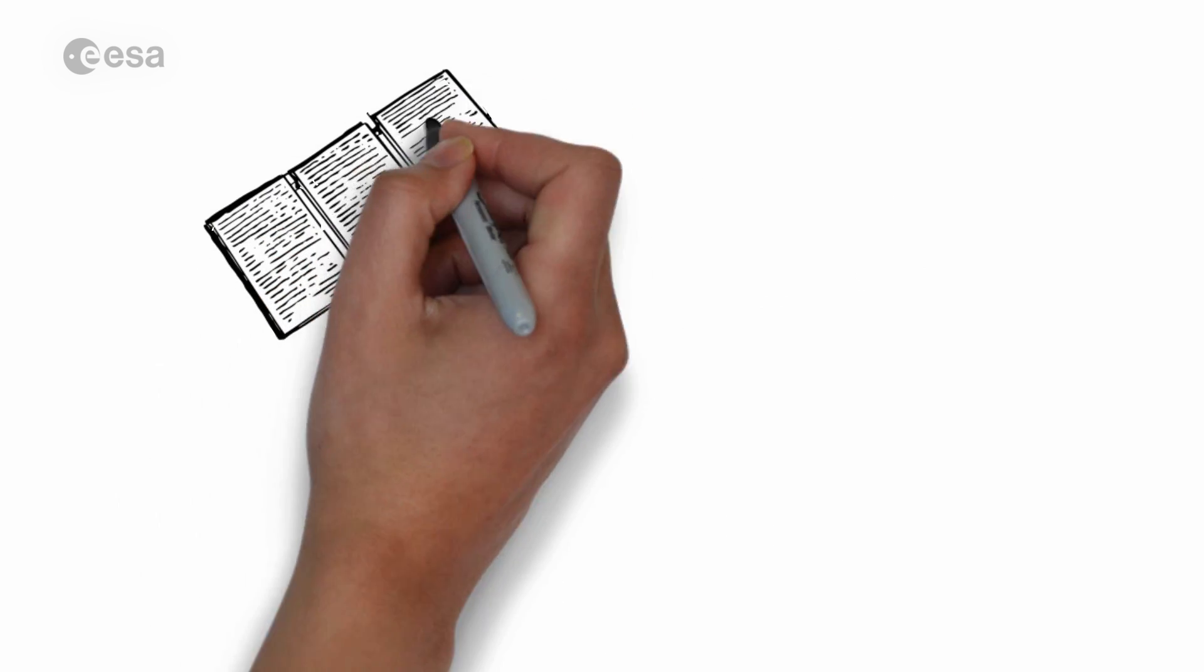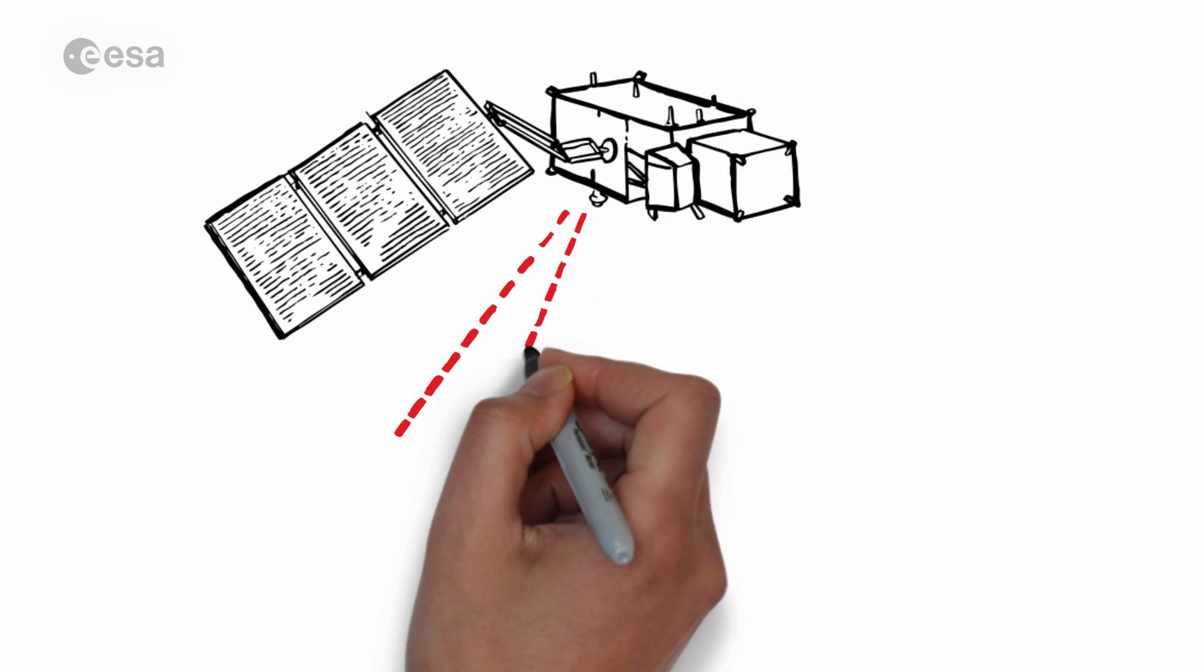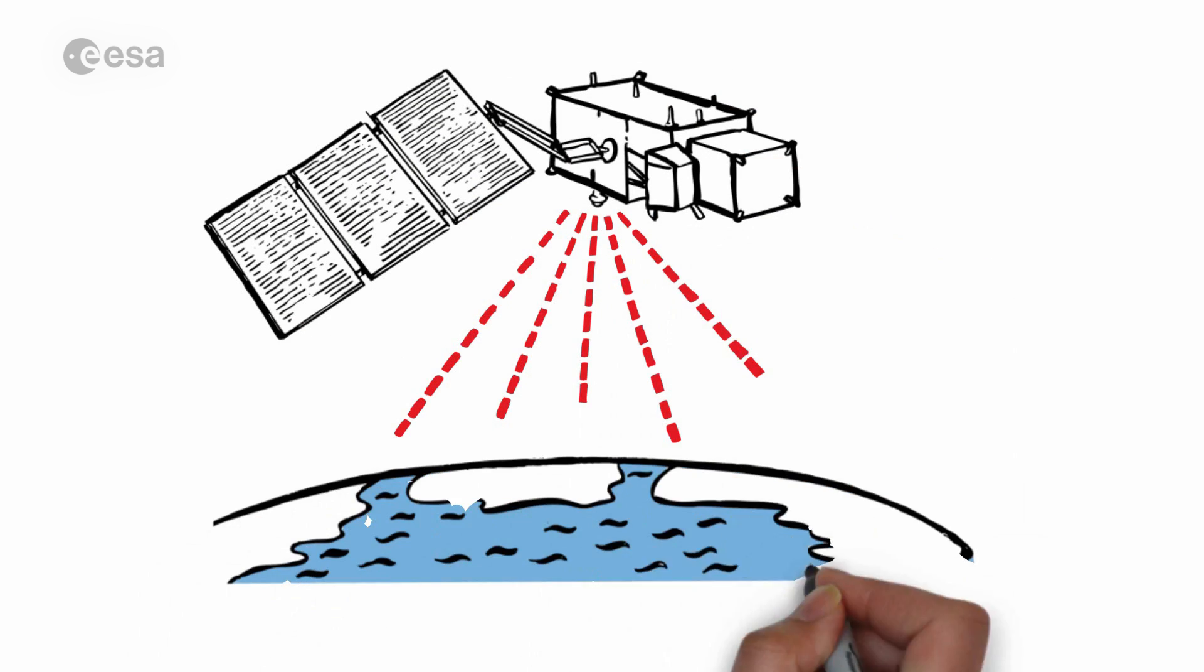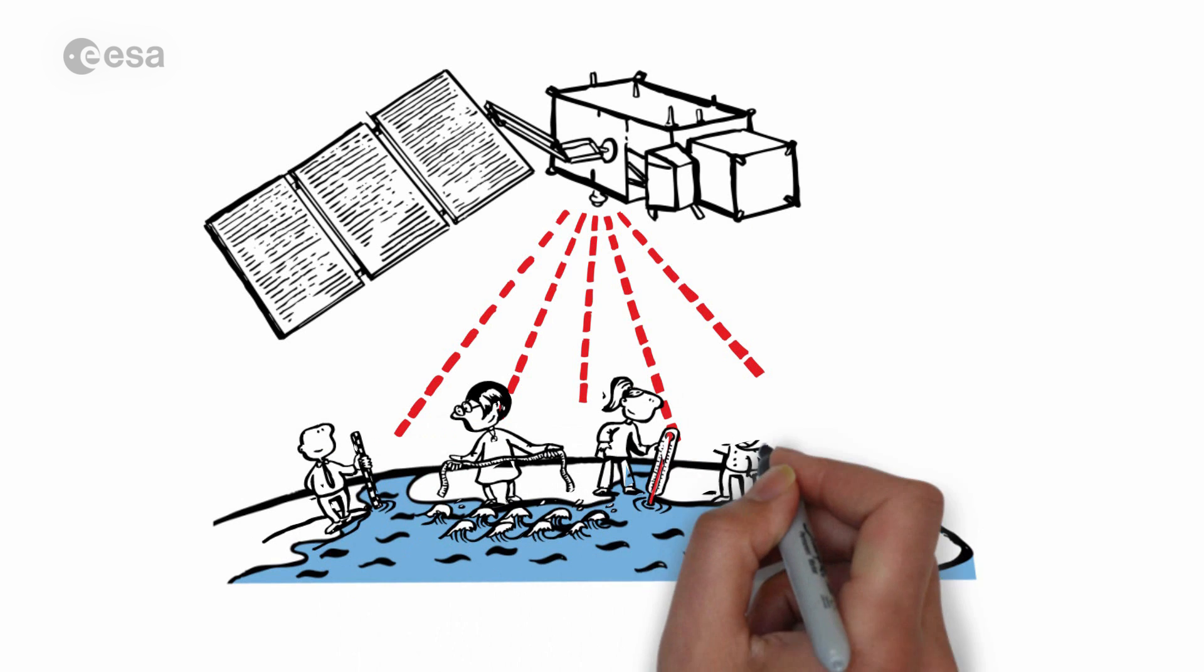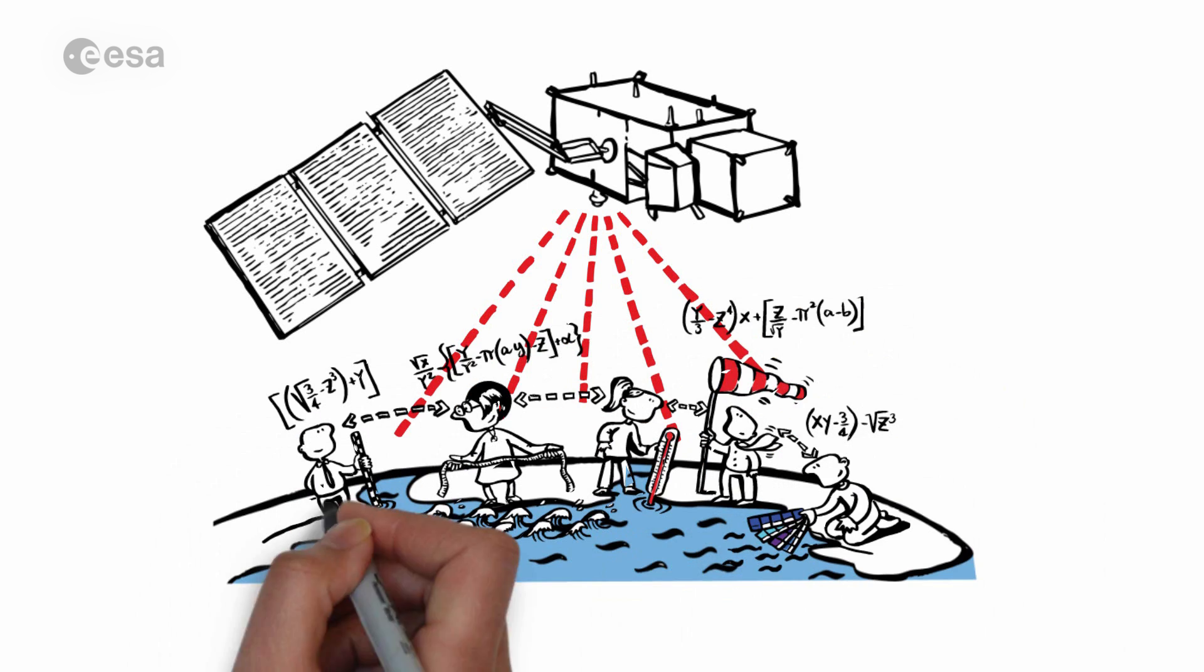Sentinel-3 will, for the first time, provide almost daily coverage of all surface water on a global scale, with information about its levels, movement, temperature, the wind speeds and the water color.